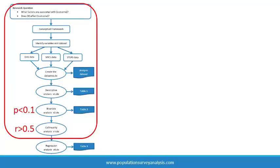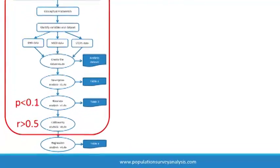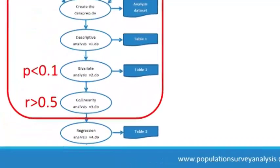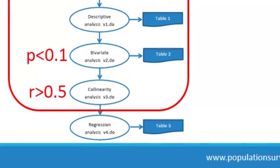Before we build a multivariate model, we should first test the independent associations between each covariate and the outcome in the bivariate analysis, and only advance those variables that were statistically significant at p less than 0.1, or which we decide a priori need to be in the model for conceptual reasons.